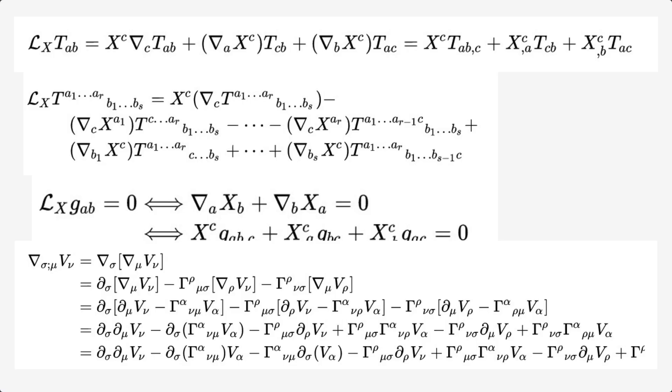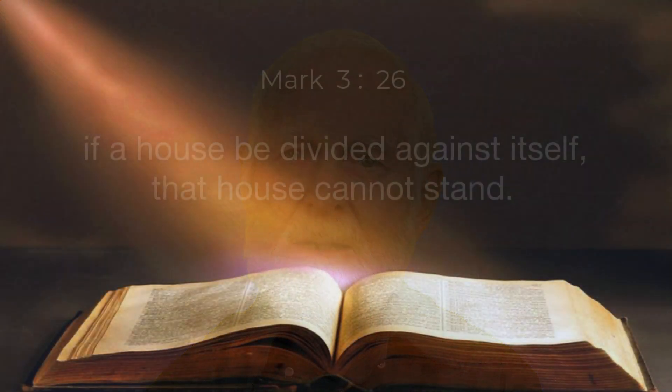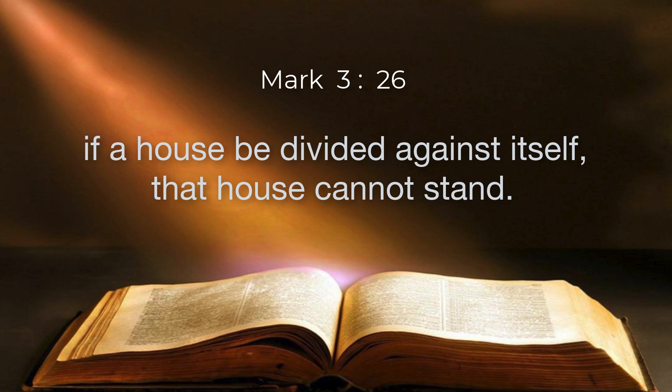But the relativity establishment put forward a refutation of Sagnac and Michelson and Gale using the abstruse mathematics of general relativity — multidimensional tensors in space-time and non-Euclidean geodesics. So they use general relativity, which requires an aether, to disprove experiments demonstrating the existence of the aether, because special relativity can't allow an aether. Otherwise, how would they get out of the Earth not moving? Well, the Bible says: if a house be divided against itself, that house cannot stand.